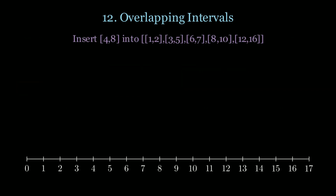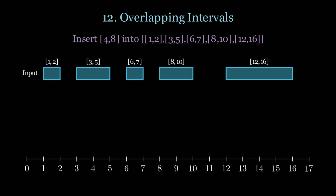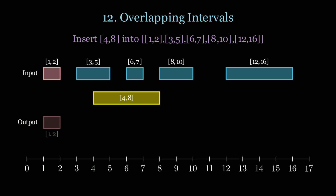Now let's take a look at an example. If I want to insert interval 4–8 into a list of intervals, I keep track of the input and the merged interval. When we scan 1–2 there's no overlap, so we just carry it. However when we scan 3–5 we notice there's overlap, so we expand the merged interval.